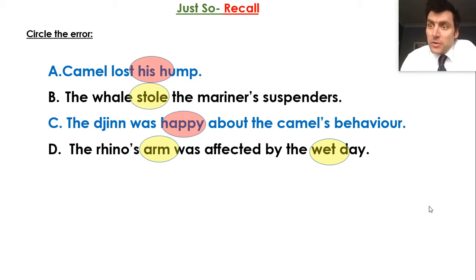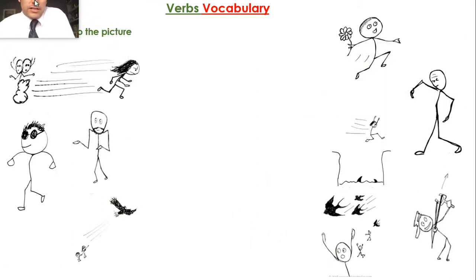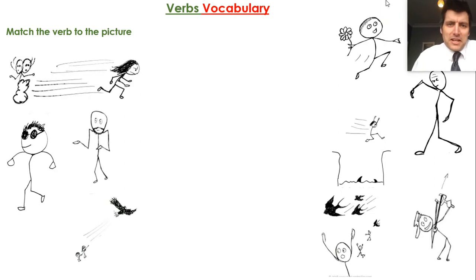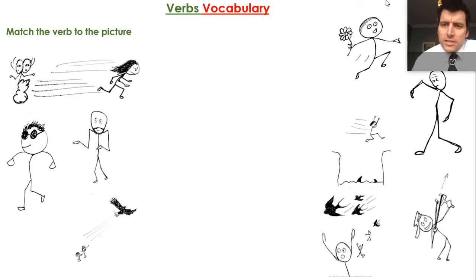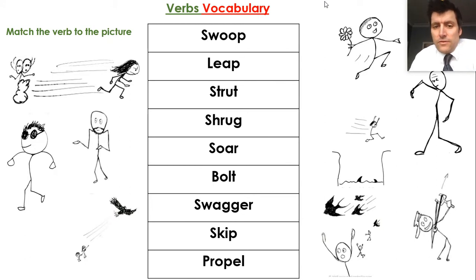OK guys, hopefully we can recall those three just-so stories that we read last week. What I'd like you to have a look at now is matching these images to the verbs. I'm going to give you a list. So we've got some verbs shown here and some different verbs listed, and I'd like you to try and link the image to the verb on your sheet.